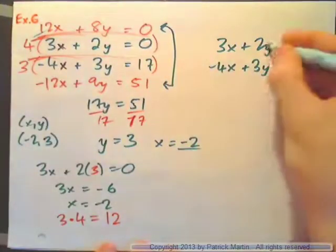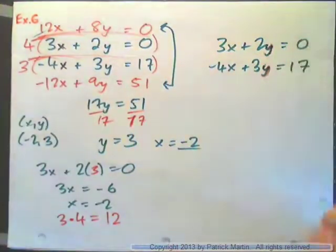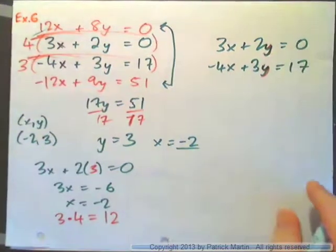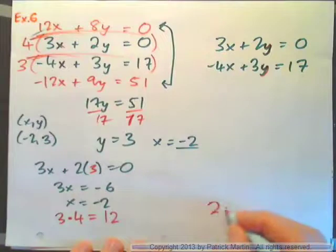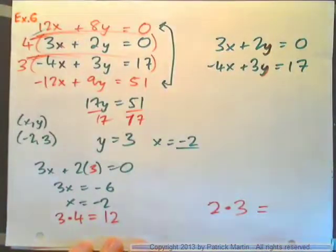How about eliminate, how would you eliminate these y variables? Can you do that? What's a common multiple of 2 and 3? What's 2 multiplied by 3? 6, isn't it?